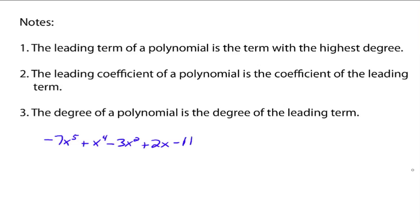For example, negative 7x to the 5th plus x to the 4th minus 3x squared plus 2x minus 11. Here's a polynomial written in standard form where the degrees go in descending order. This first term, negative 7x to the 5th, is called the leading term after you rewrite it so the degrees go in descending order. The negative 7 is called the leading coefficient, and 5 is called the degree of the polynomial.